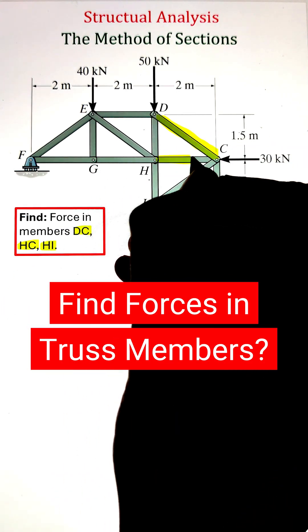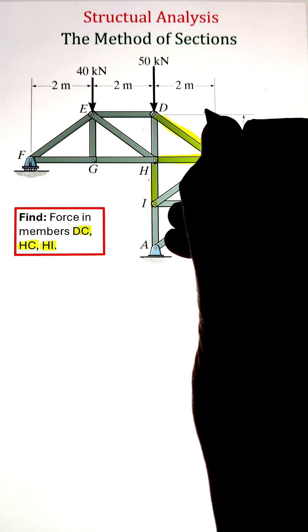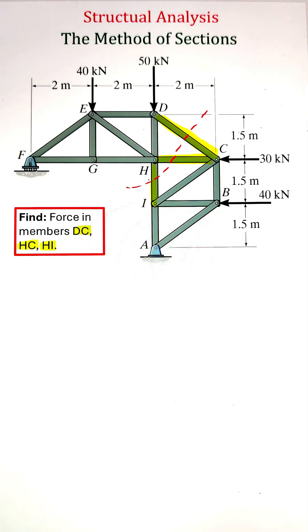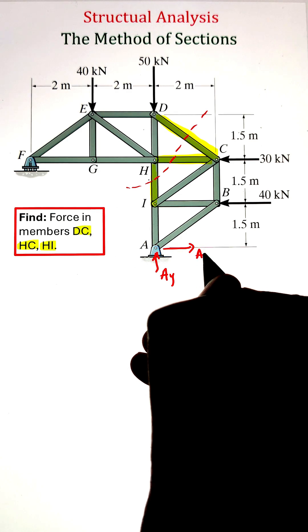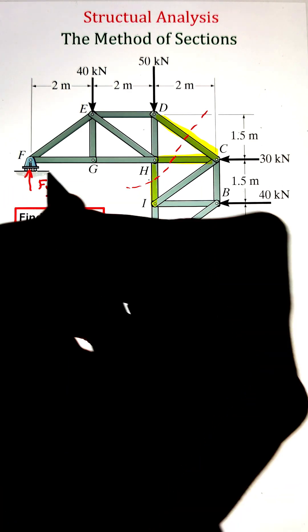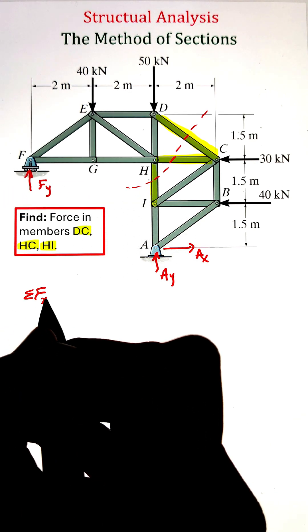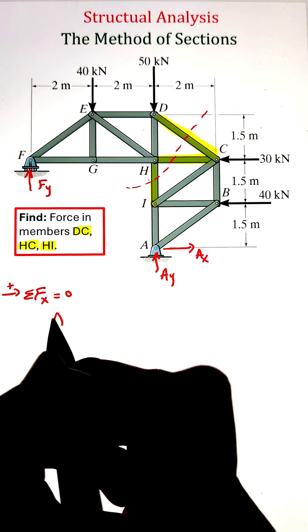In order to find the forces in truss members, we can apply the method of sections. Here we are looking for forces in members DC, HC, and HI. So we have to apply a cut along those members and divide the structure into two halves. Now we can pick any one of the halves to identify the forces along those members.